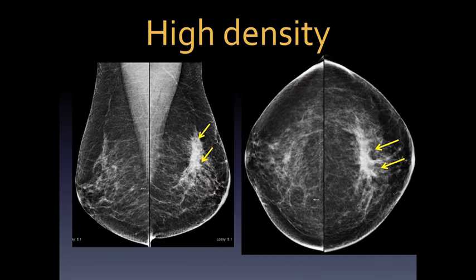Linear distribution follows grouped, where calcifications are arrayed in a line and associated with malignancy much more frequently — 68 to 70% of the time. Here are fine pleomorphic calcifications with a few coarse heterogeneous calcifications — not linear by morphology — but when you look at the distribution, they configure along a linear pattern. This should raise strong concerns for malignancy, assigned BI-RADS category 4C. These turned out to be DCIS of intermediate nuclear grade.